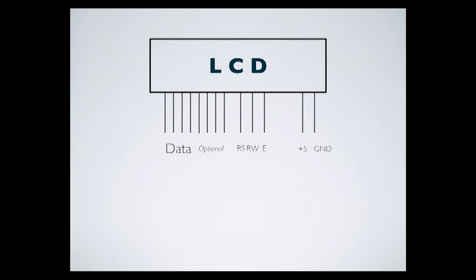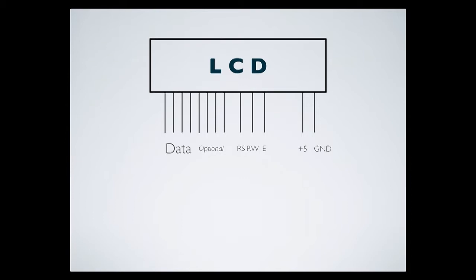With an 8-bit display you couldn't add much more than analog inputs. Using only four data bits — four data, RS, RW, and E — that's seven of the 11 digital pins, leaving you four additional digital pins. You can see how quickly you use up resources on an Arduino.